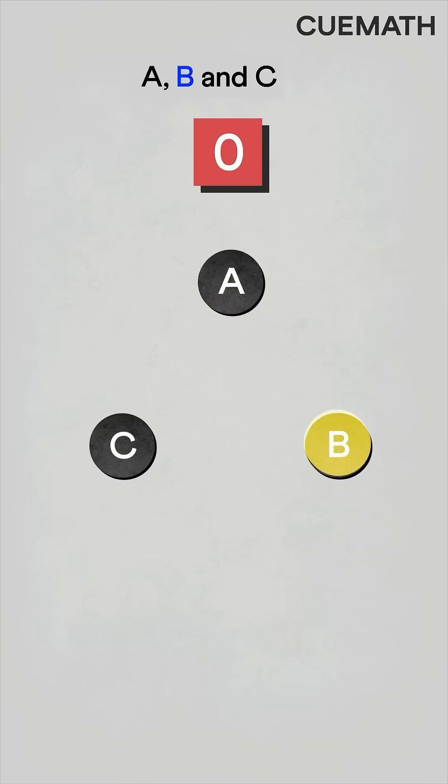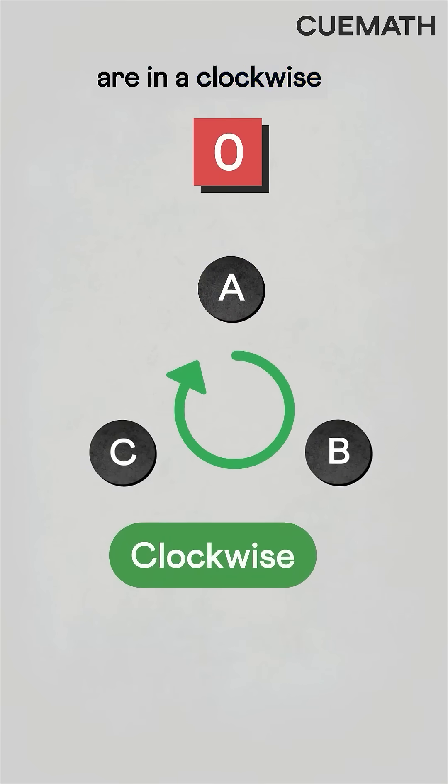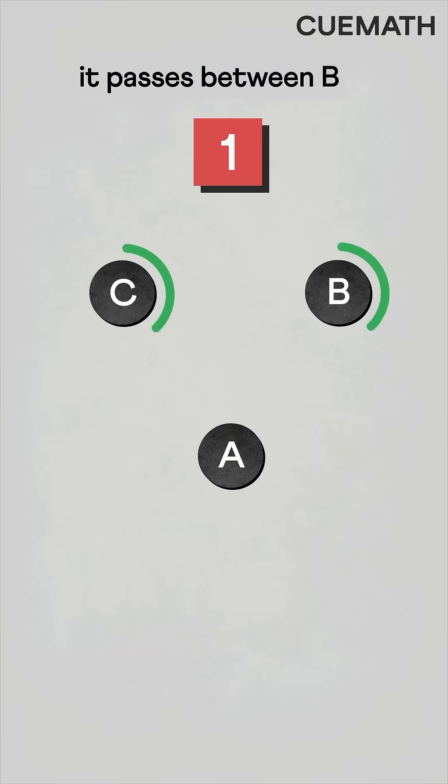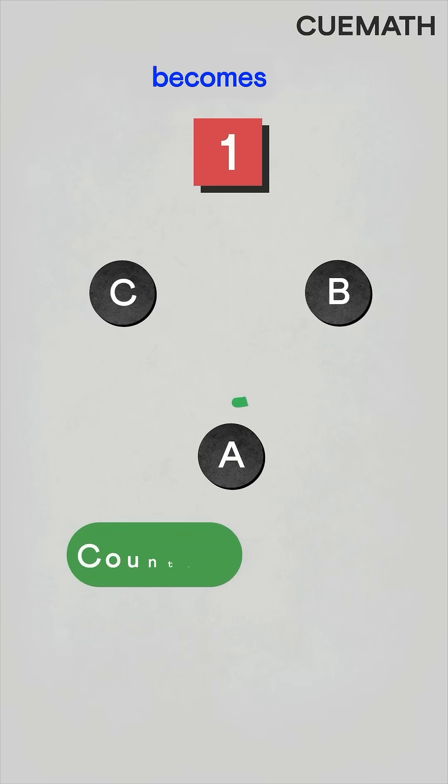Initially, the pucks A, B, and C are in a clockwise orientation. When you hit puck A and it passes between B and C, the orientation becomes counterclockwise.